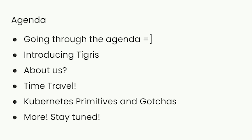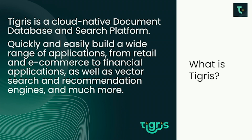Tigris is a cloud-native document database — I like to call it a data platform. We are Kubernetes-first and aiming to be an open-source alternative to MongoDB and other document databases. If you're interested, check us out at tigrisdata.com where you can apply for a beta account.